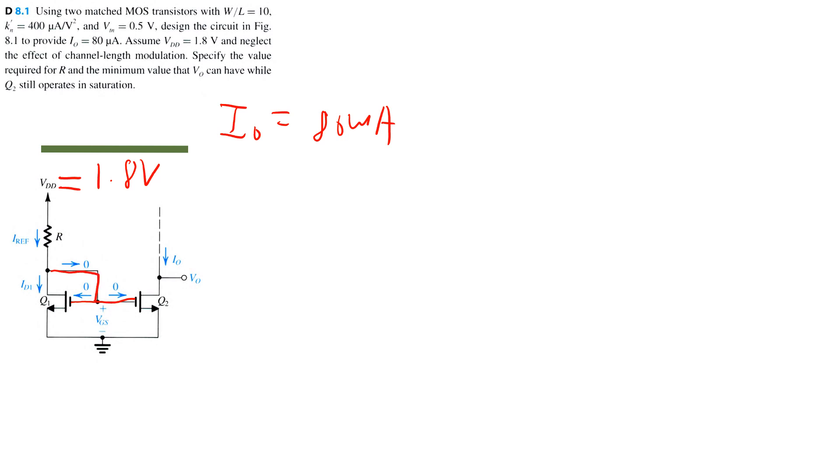So I know that IO is equivalent to the drain current at Q2. And because Q1 and Q2 are mirrored, I know that because both transistors have the same width divided by length, KN' and VTN, that ID2 will also equal ID1. Or in other words, the output current will be equal to the reference current.